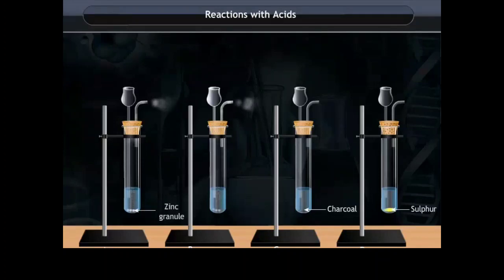We know that zinc and iron are metals, whereas charcoal and sulfur are non-metals. Bring a burning matchstick near the mouth of each test tube. What will you find? You will find that gases formed in tubes A and B burn readily, but nothing happens in tubes C and D. Thus, we conclude that metals react with acids to produce hydrogen gas and metal salts.